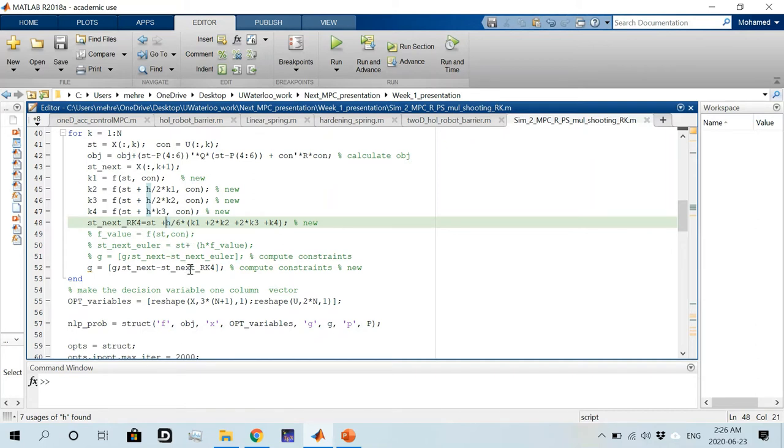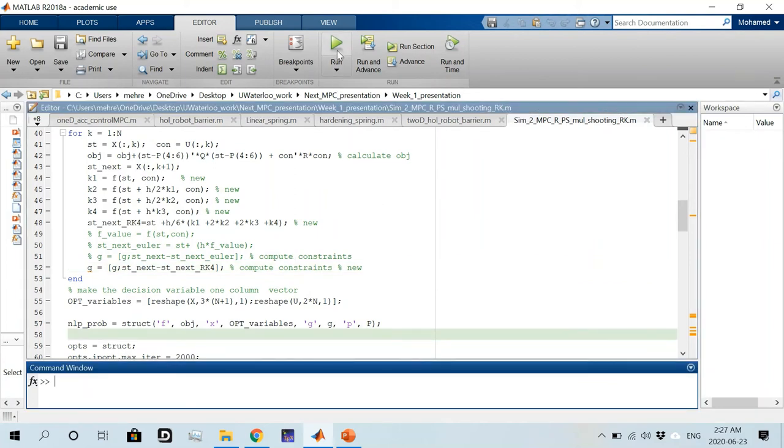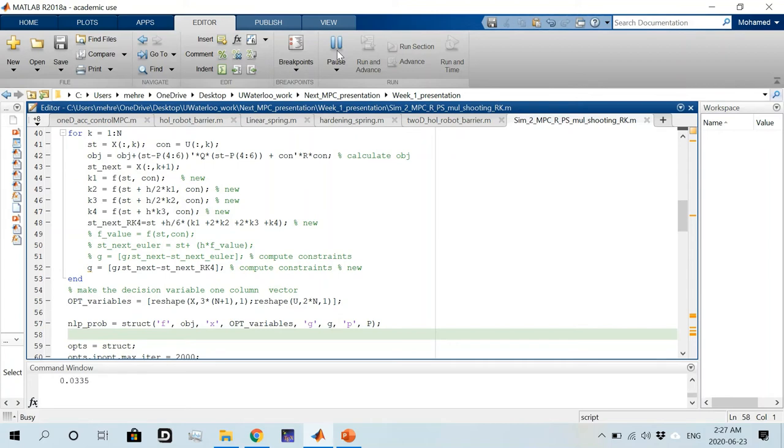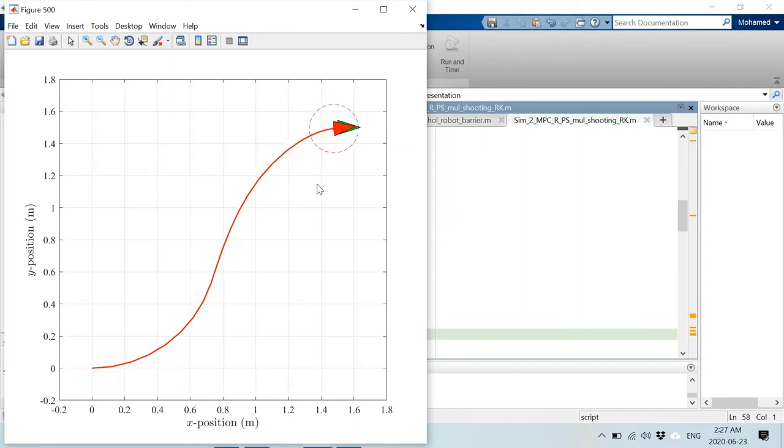This estimated state using the RK method will be added to our constraints vector for the multiple shooting method. That's the only modification we have to make to this file and the rest of the code will remain the same. We can run our file as usual, and we get the simulated robot. All right, so I guess that's it for me for this video. Thank you for watching.